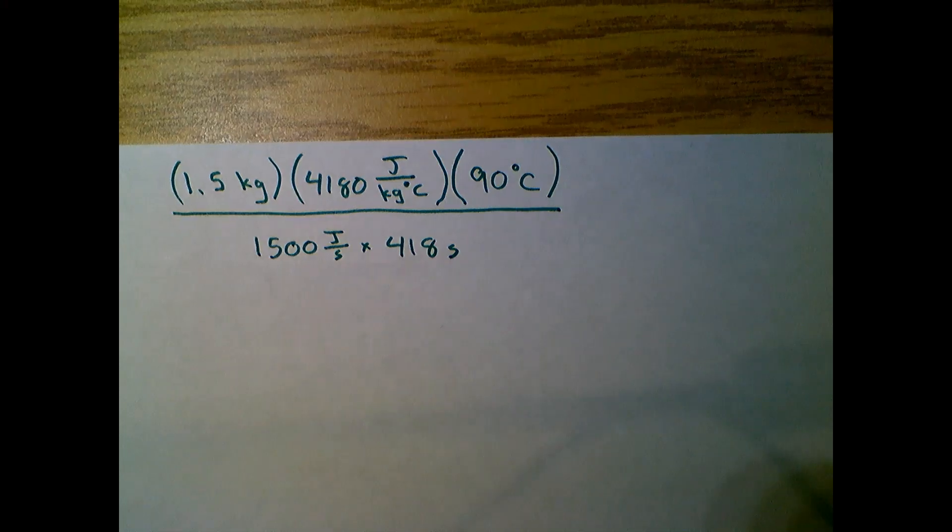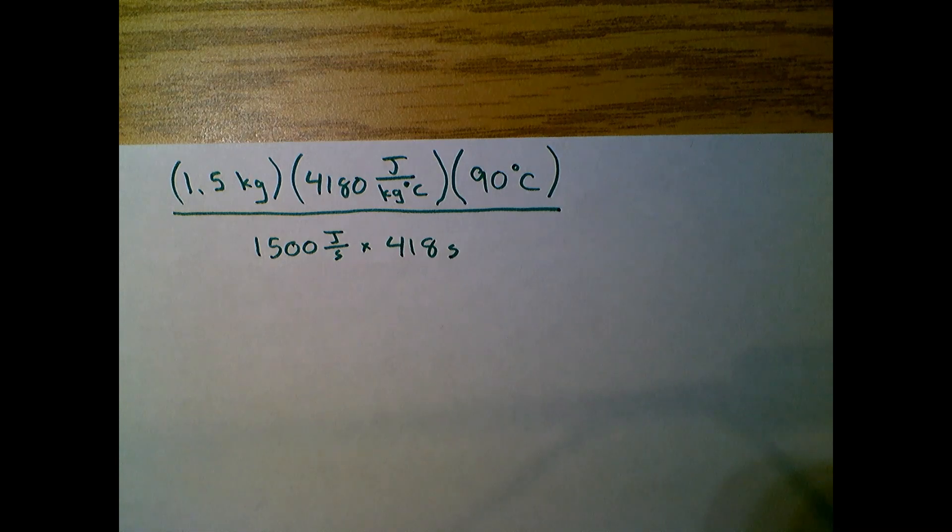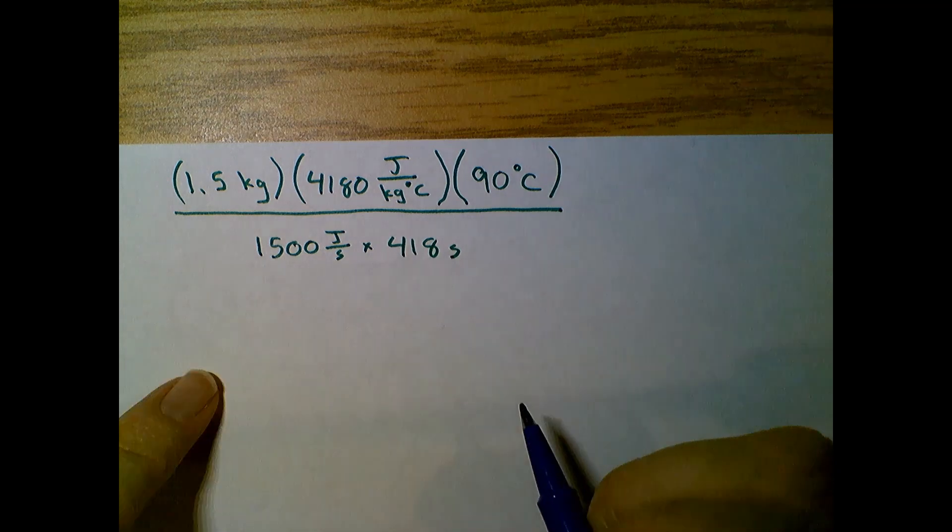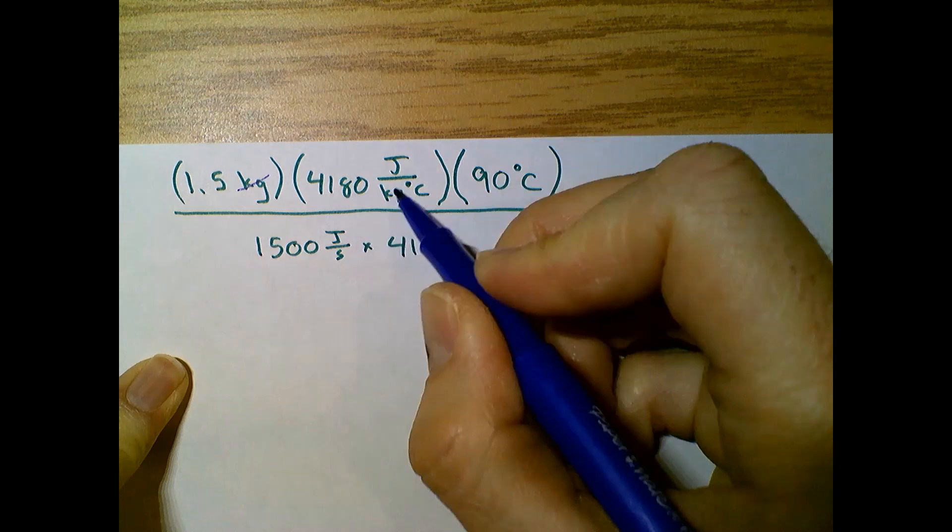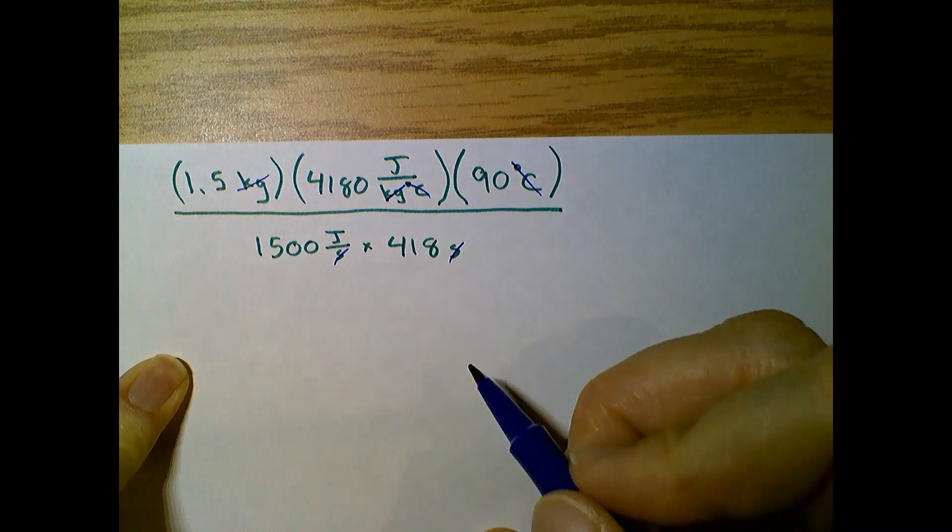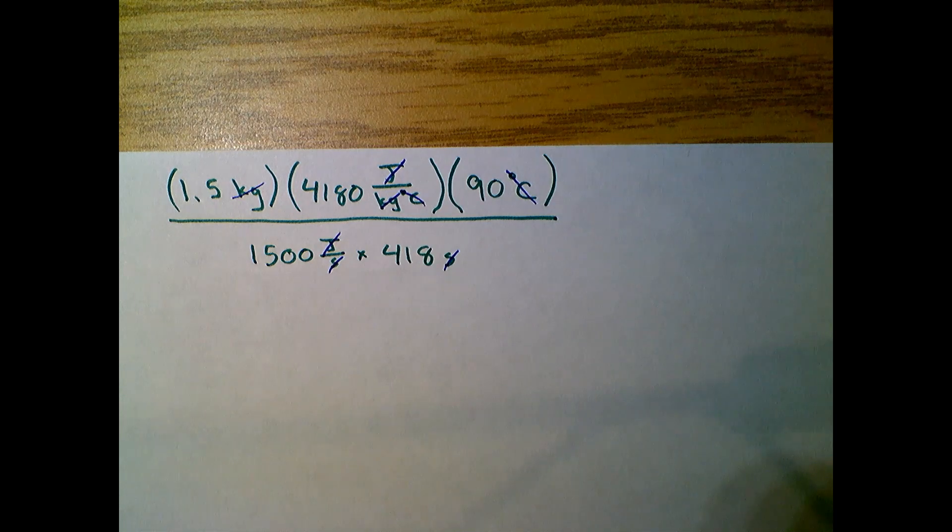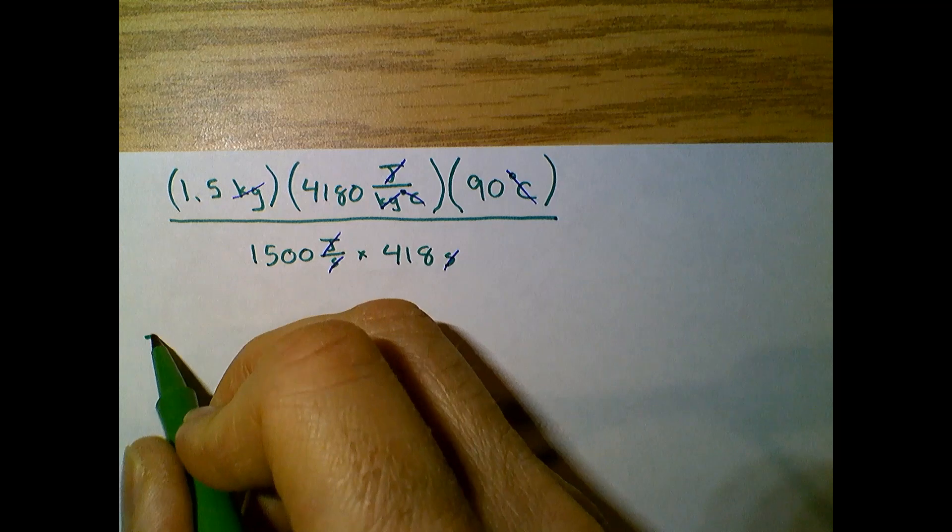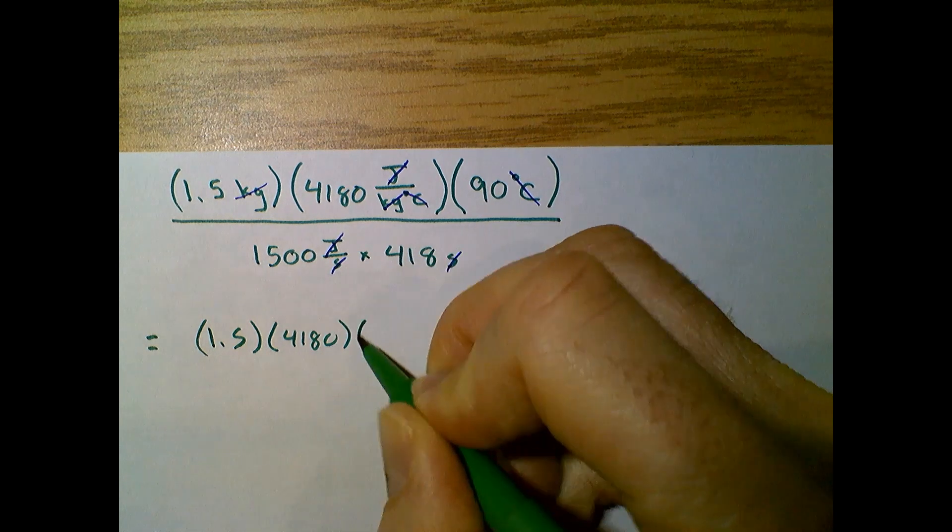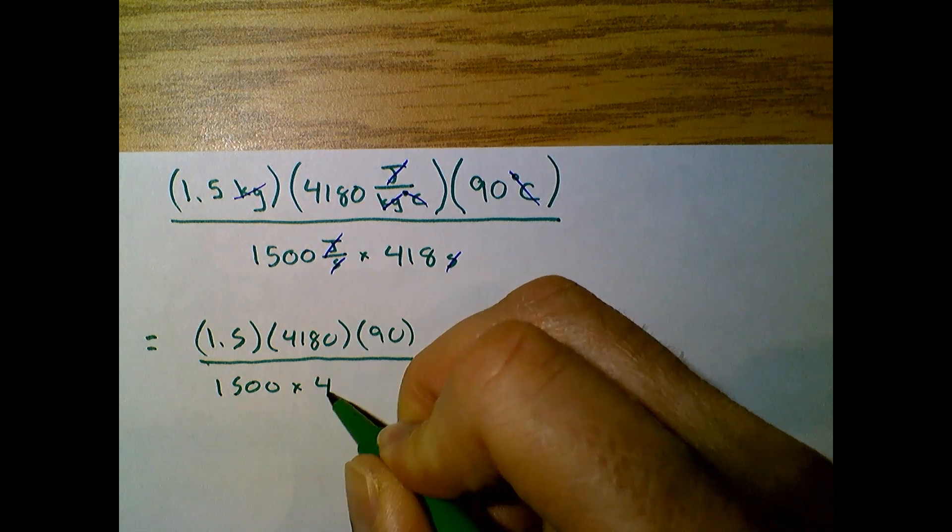I had an opportunity from that last video with these numbers to show something fun about when you lay numbers out and look for cancellation opportunities. So first, let's take care of the units in this one. We've got kilograms divided by kilograms - they're gone. Degrees Celsius divided by degrees Celsius - they're gone. Seconds divided by seconds - they're gone. And joules divided by joules. So we have no units in this calculation. So the next line is going to look like this: 1.5 times 4,180 times 90 divided by 1,500 times 418.